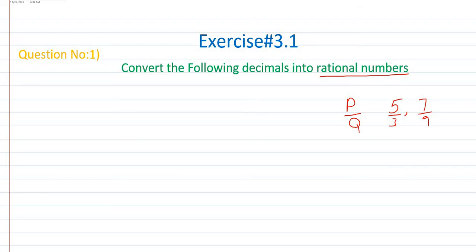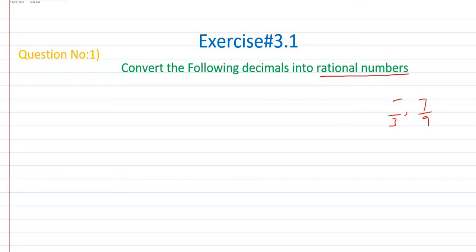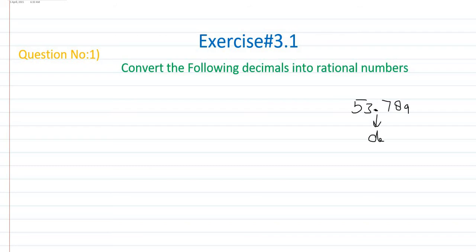Before discussing the steps to convert a decimal into a rational number, let's define a decimal number. For example, 53.789 — here the dot is called the decimal point, and the digits 7, 8, 9 after the point are called the decimal part of the decimal number.